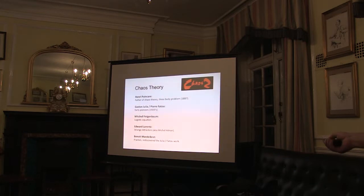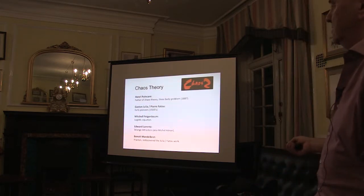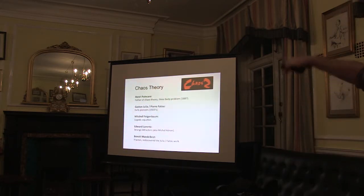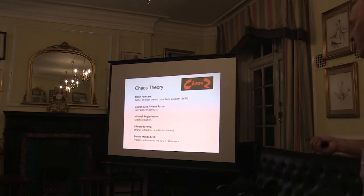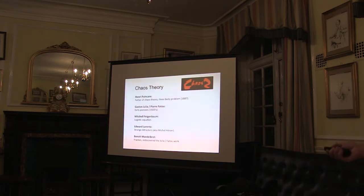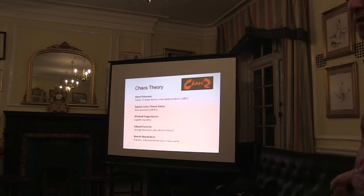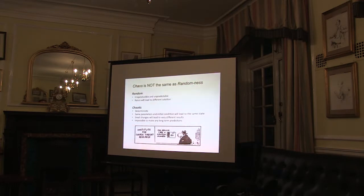Julia and Fatou did a lot of work extending Poincaré, and you can see the Julia sets rotating round. Three more figures we'll discuss: Feigenbaum, Lorenz, and Mandelbrot. The first thing to say is that chaos is not the same as randomness. A random system, if you run it again, gives a different result — it's non-predictable. If you run a chaotic system again with exactly the same numbers on exactly the same machine, you get exactly the same result. But if you change the input even a little bit, you get a different result.